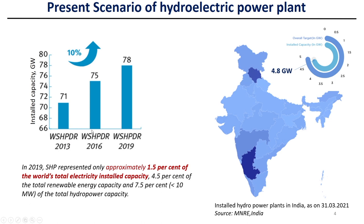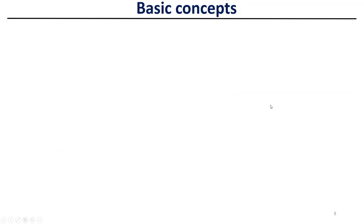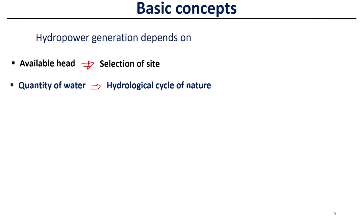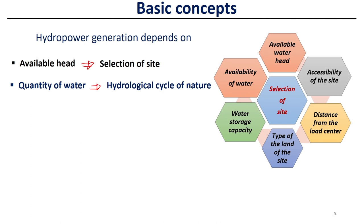Looking at installed hydropower plants in India, the installed capacity is about 4.8 gigawatt and is expected to rise. Hydropower generation depends on various parameters — primarily the available head, which is related to site selection, and the quantity of water, which is related to the hydrological cycle. Site selection factors include available water head, accessibility, distance from the load center, type of land, water storage capacity, and availability of water.